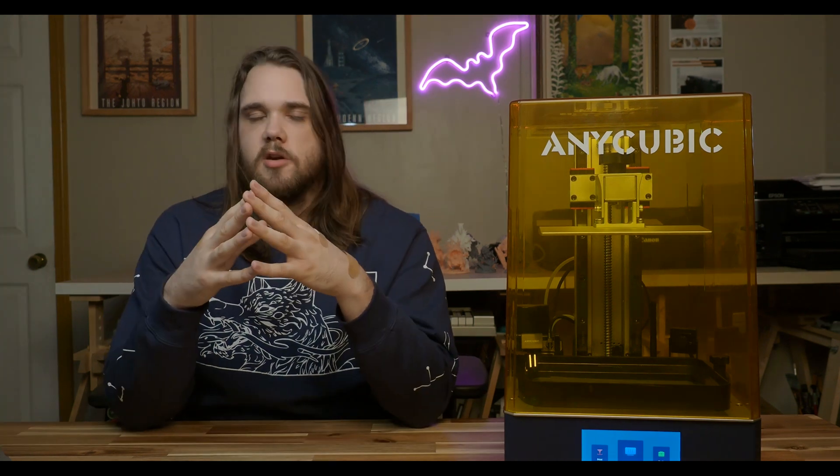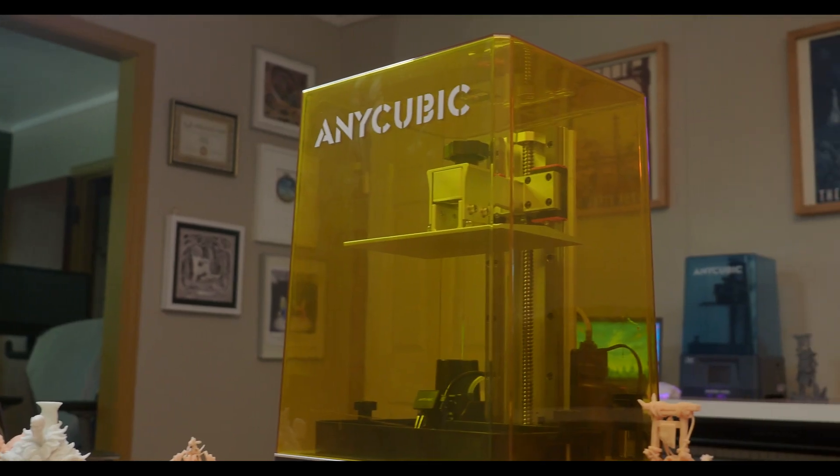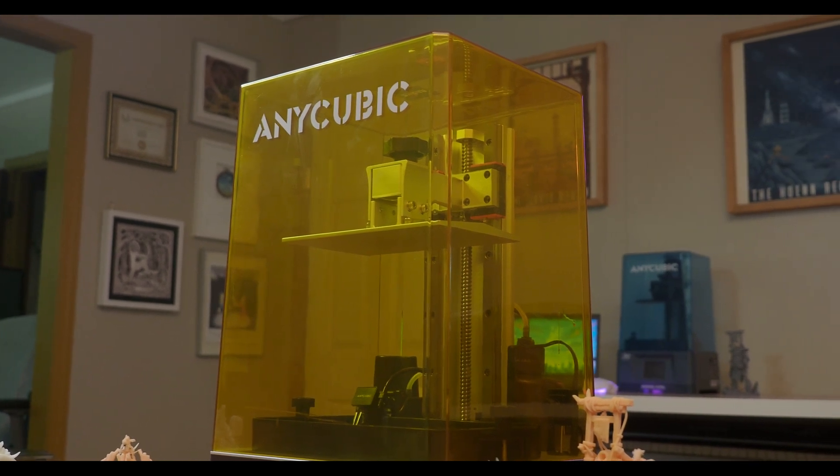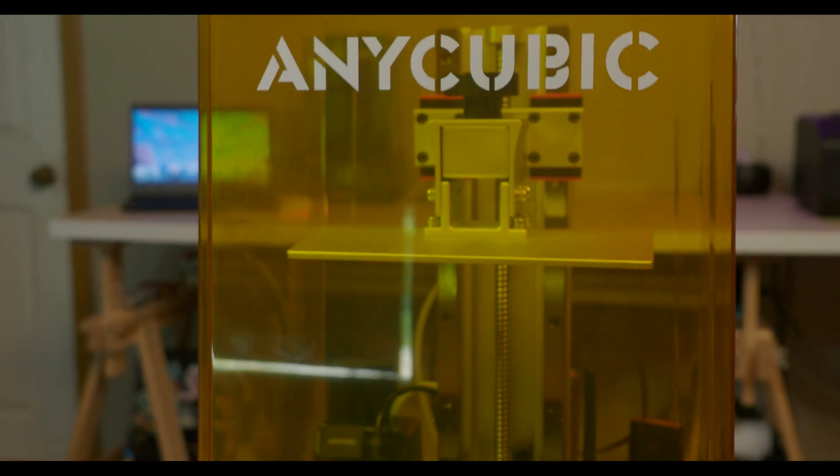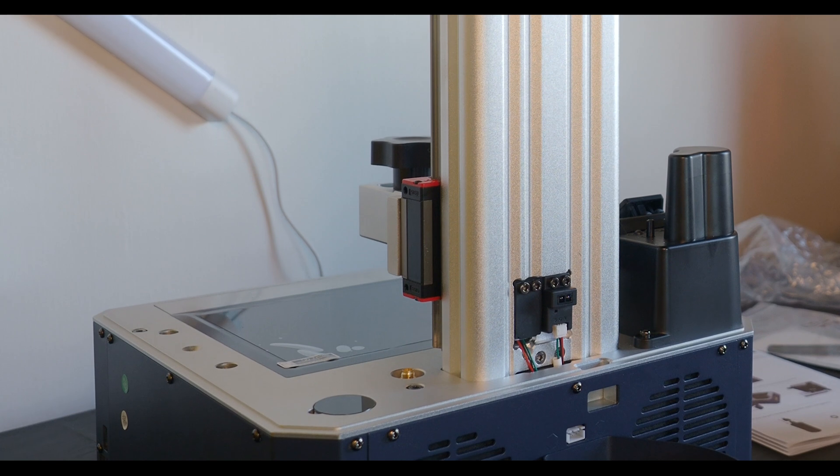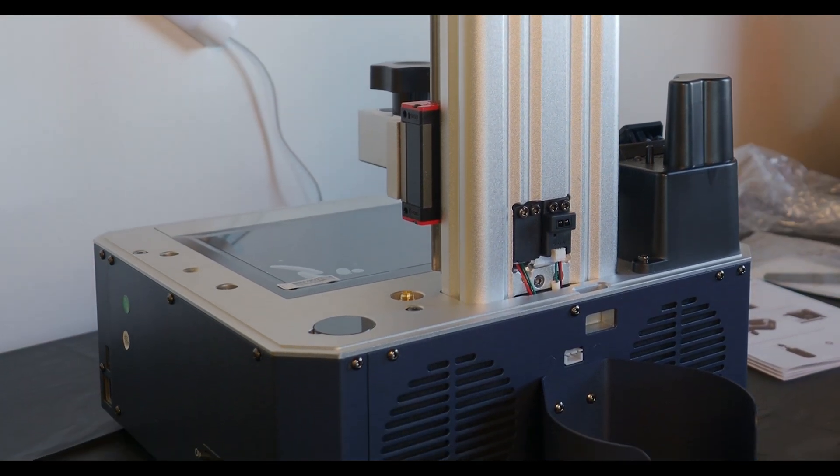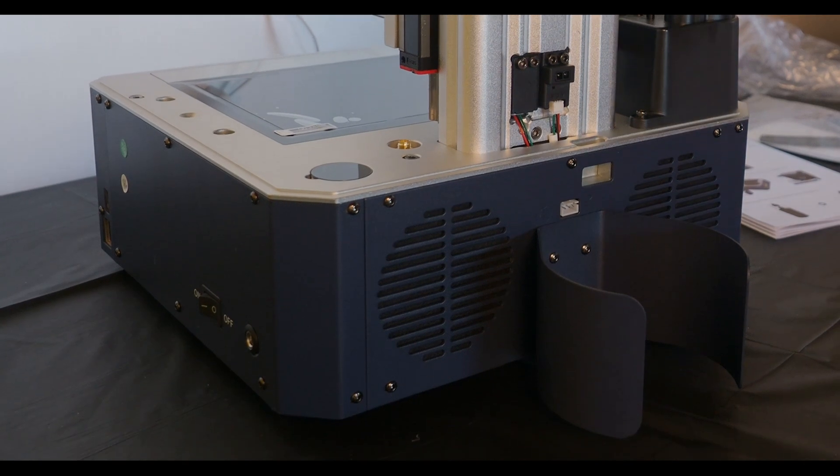At this stage, I want to introduce the M3 Plus and how it compares relative to other printers in the Anycubic lineup. It is more of a medium-sized printer, with the M3 Max being Anycubic's large-scale printer. In terms of statistics, it has a printer size of 360x290x475mm, and its build volume is 197x122x245mm.